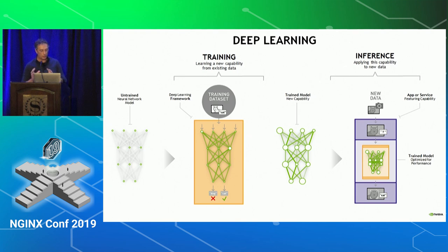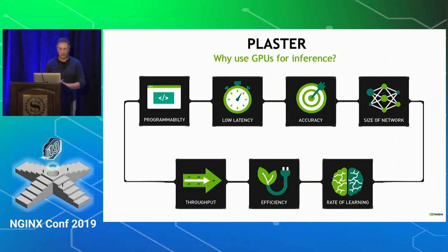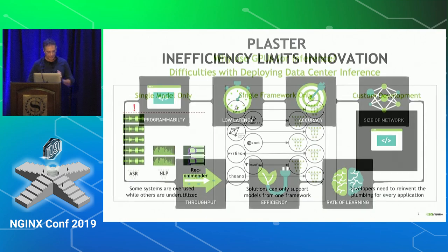During inference, you use the weights computed in the previous phase. We will focus on the inference side for the rest of the talk. In the inference part of deep learning, you want to have programmability, low latency, accuracy. You have to deal with huge network sizes. You want high throughput, efficiency, and rate of learning. All of this is delivered by using GPUs, and that's the reason why we care about it.